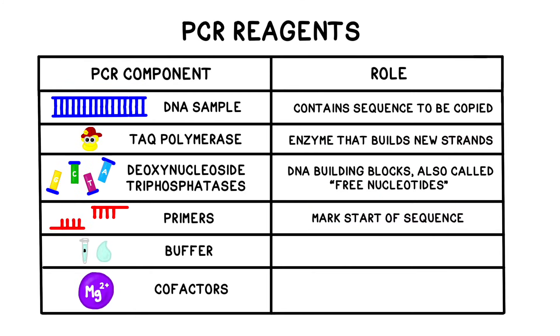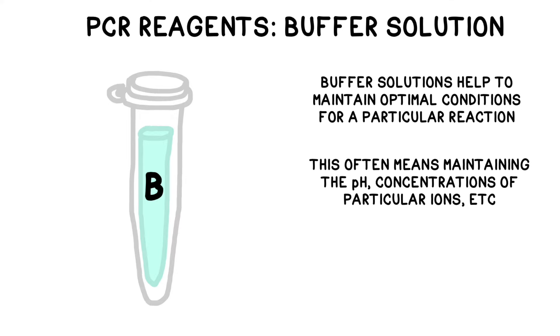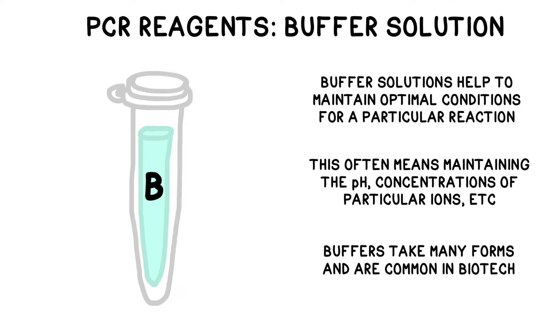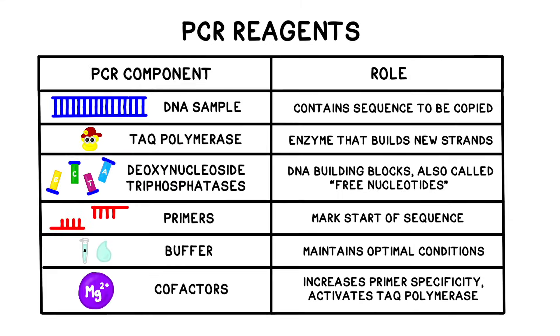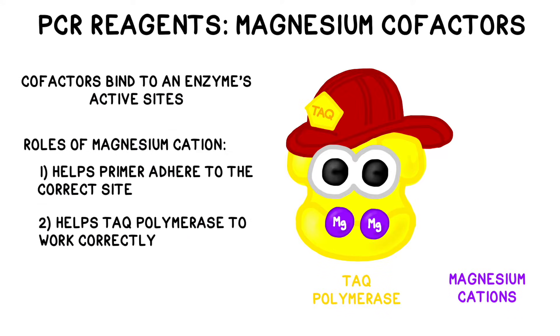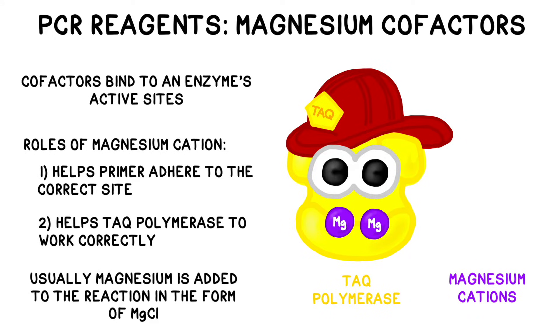The PCR process also needs two more reagents to create the ideal conditions for amplification: a buffer solution and a magnesium cofactor. Buffer solutions help to maintain optimal conditions for a reaction to occur, often maintaining the pH or concentrations of particular ions. The magnesium cofactor has two roles: it helps the primers to adhere at the correct site, and it helps the Taq polymerase enzyme to function optimally. Usually these magnesium ions are added to the mixture in the form of MgCl2.